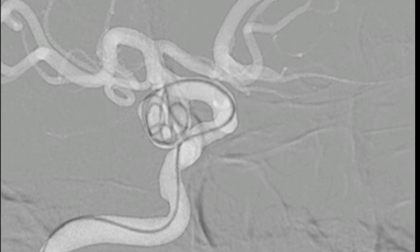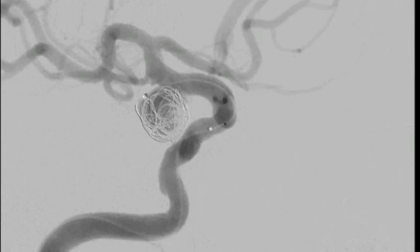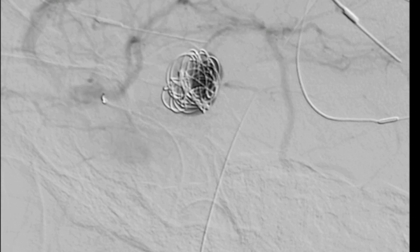As the framing coil is placed and fully within the aneurysm, the coil is detached after an angiographic run which is seen here confirms that the coil is well within the aneurysm and the parent vessel is widely patent without thrombus. The coil is detached and now further filling coils are used to fill the aneurysm and assume the shape of the previously placed framing coil.